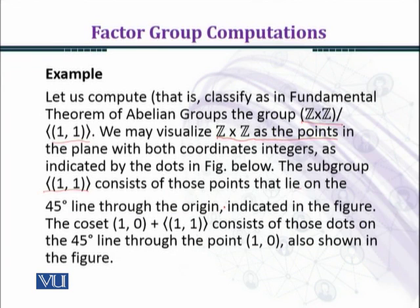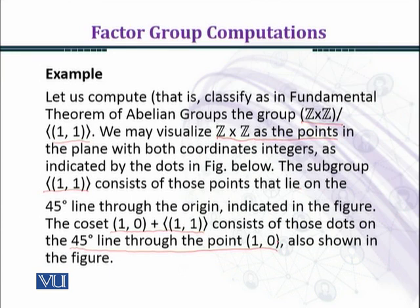Each coset consists of those points lying on one of the forty-five degree lines in the figure. The coset (1,0) plus ⟨(1,1)⟩ consists of those dots on the forty-five degree line through the point (1,0), also shown in the figure. The subgroup is the cyclic group generated by the ordered pair (1,1).